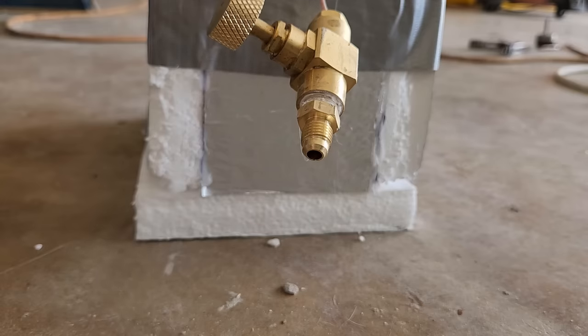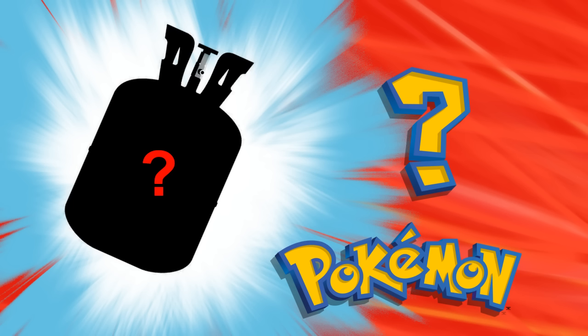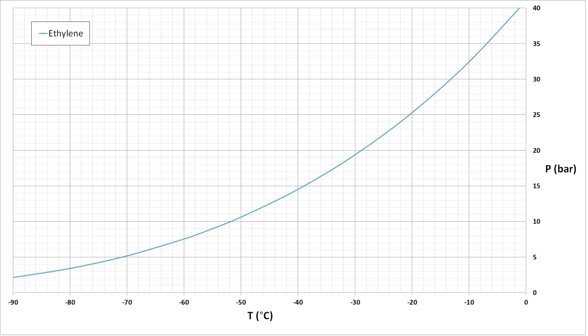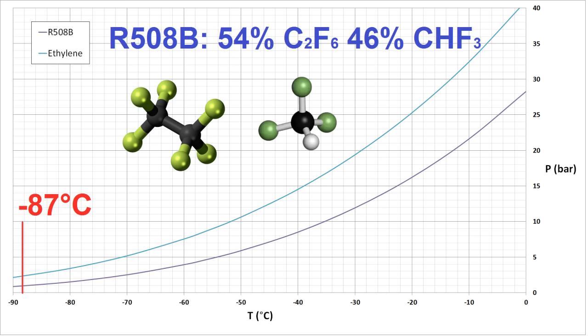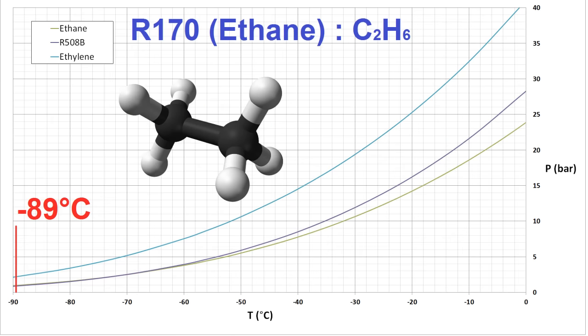So while I figure that out, I'm going to look for another second stage refrigerant. For commercial use, there's R508, which boils at minus 87°C, but that's insanely expensive and I don't have a license to buy it, so that's out. A close relative of ethylene is ethane, which boils at minus 89°C. That would be ideal.